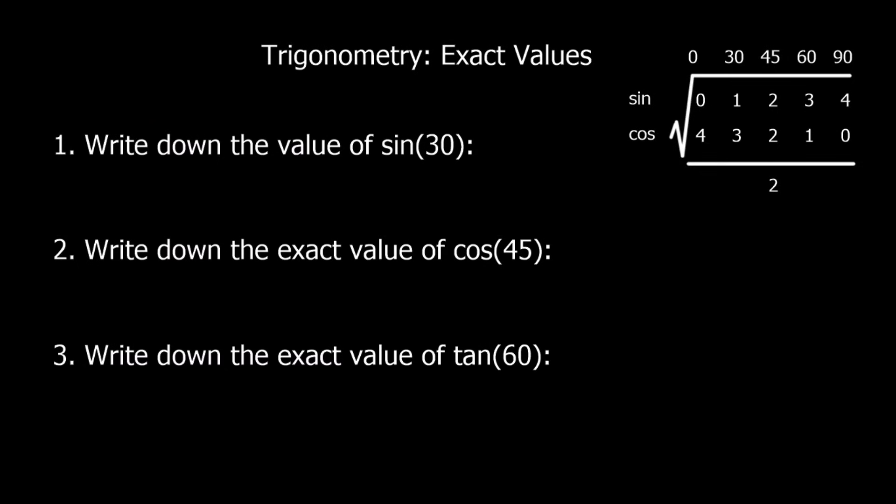Write down the value of sin 30. Sin meets 30 here. It's root 1 over 2. But root 1 can simplify to 1 because the square root of 1 is 1. So that's a half.